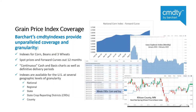We provide industry-leading coverage and granularity for the indexes. We have a set of indexes for corn, beans, and three varieties of wheat, covering not just spot prices but the full forward curve up to 12 months. We also provide a continuous cash and basis chart, as well as indexes for definitive delivery periods. The indexes are available at several geographic levels, from county to crop reporting district, up to state level, regional, and even national coverage.